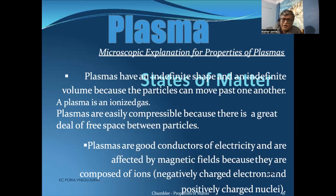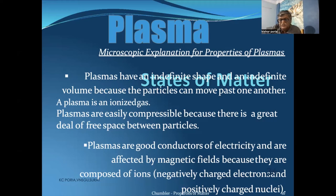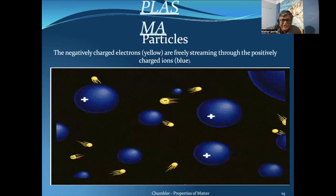Now, another state of matter is the plasma state — a high temperature state. Plasma has an indefinite shape and indefinite volume because particles can move past one another. Plasma is an ionized gas. Plasmas are easily compressible because there is a great deal of free space between particles. Plasmas are good conductors of electricity and are affected by magnetic fields because they are composed of ions — positively charged nuclei and negatively charged electrons.